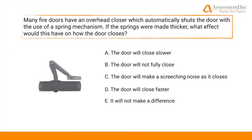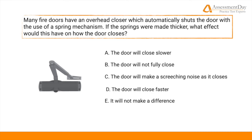Many fire doors have an overhead closer which automatically shuts the door with the use of a spring mechanism. If the springs were made thicker, what effect would this have on how the door closes? A, the door will close slower. B, the door will not fully close. C, the door will make a screeching noise as it closes. D, the door will close faster. E, it will not make a difference. Take a moment to pause this video and see if you can work out the question for yourself. You shouldn't need more than 30 seconds or so.